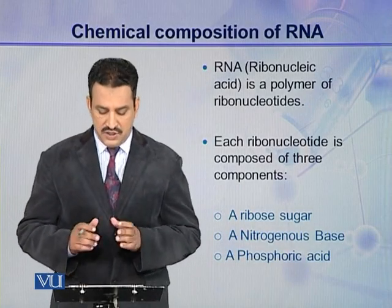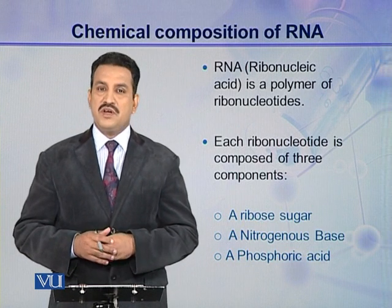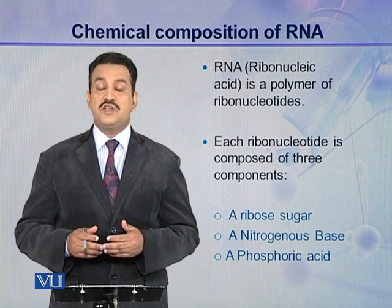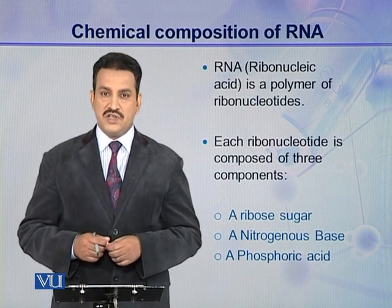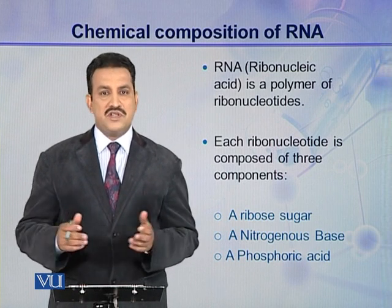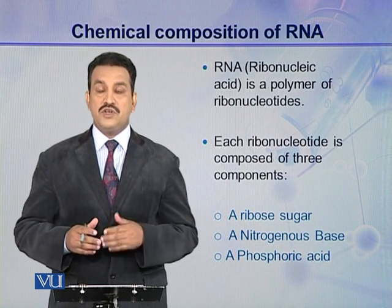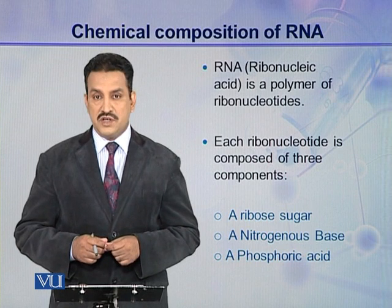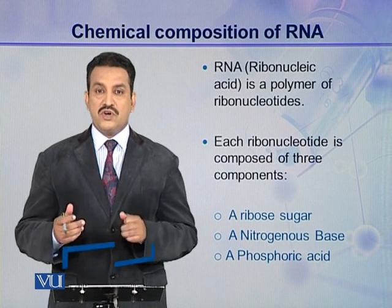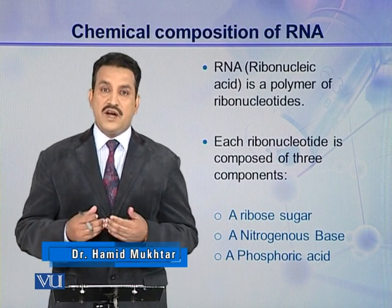Dear students, in this module I am going to discuss the chemical composition of RNA, or ribonucleic acids. This is another major type of nucleic acid present in the cells. It is also a polymeric compound just like DNA. DNA is made up of deoxyribonucleotides, but RNA is made up of ribonucleotides. Ribonucleotide is the monomer of ribonucleic acids.